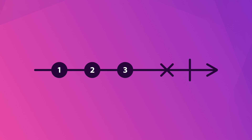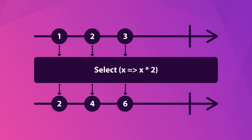Soon I'll cover operators and how they filter, transform, and combine observables — these can all be visualized by marble diagrams as well. Take the Select operator: the emitted values flow into a box that represents the transformation, then they flow down into a new observable that is visualized by its own marble diagram. Marble diagrams are powerful tools that can help you fully grasp and understand how the more complicated operators are affecting your observables.